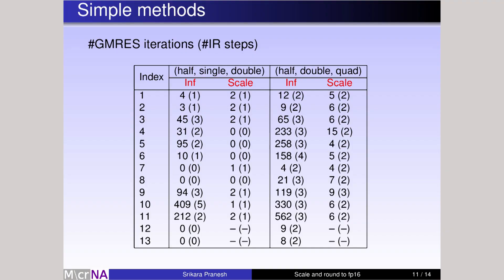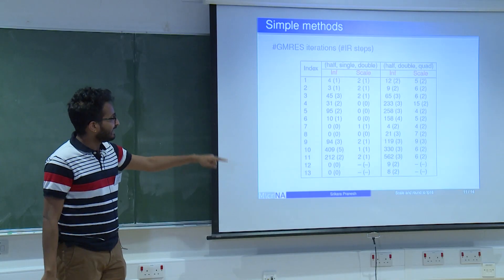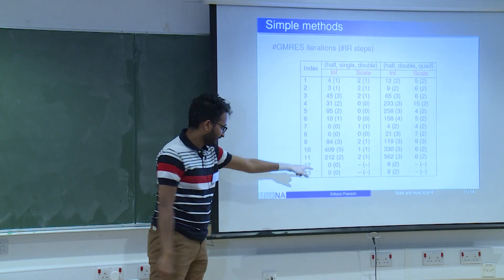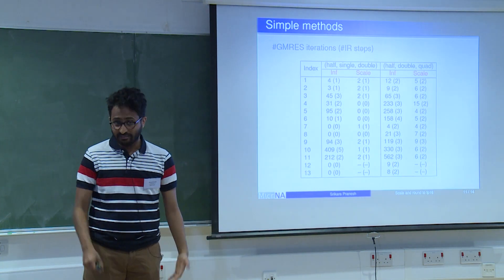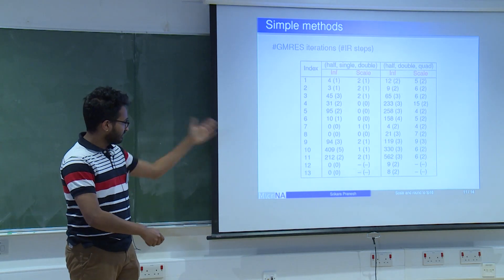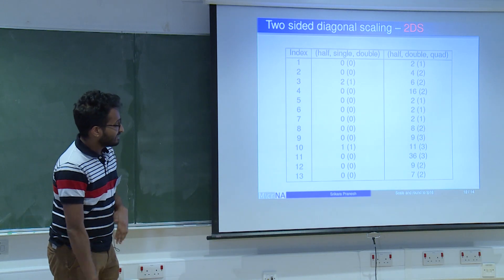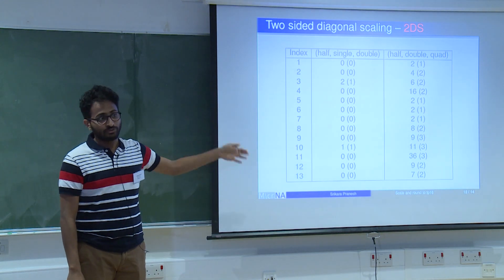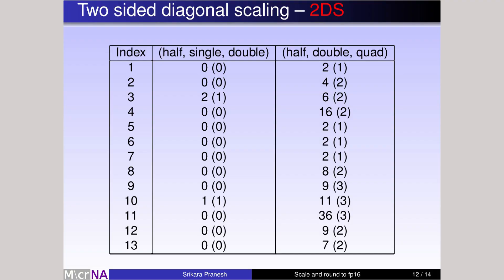Results: "inf" refers to replacing infinities with X_max, and "scale" refers to dividing by the maximum element. The number outside the parenthesis is the total number of GMRES iterations and the number inside is the number of iterative refinement steps. With the simple remedies, there are a large number of iterations and some cases where iterative refinement does not even converge, because the matrix underflows and becomes singular in half precision. The result for diagonal scaling is much better — zero implies no iterative refinement at all is needed, meaning the initial guess from half-precision LU factors is already accurate to single precision.